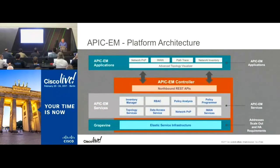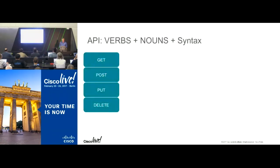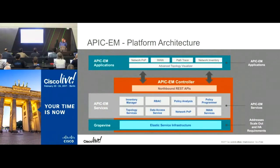APIC-EM is a modern piece of software — it's microservices-based. Those services communicate east-west through a message bus, and all of those services expose APIs. Everything you see done on the controller can be done programmatically via an API. How much does it cost? It's free. Some applications like iWAN are licensed, but the general controller itself is no charge.